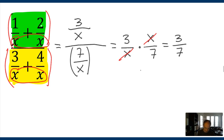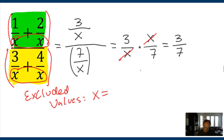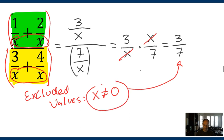If we're going to use these simplified values, x is not allowed to equal 0 in the original. Even though it simplifies down to 3/7, if we were making a graph of this, something weird would be going on at x=0 because the original is not defined there. That's important to note, although it doesn't affect your algebra.